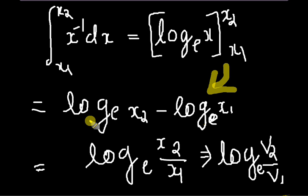We know that log to the base E of M by N is equal to log to the base E of M minus N. So, I just use that here. I get log to the base E of X2 by X1 is equal to log to the base E of X2 minus log to the base E of X1.